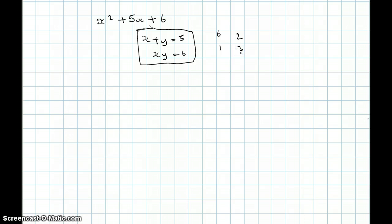So if we try 6 and 1, then we'll get our middle value as 7x. x plus 6, x plus 1 will give us x squared plus 7x plus 6. We want 5x. So let's try 2 and 3.